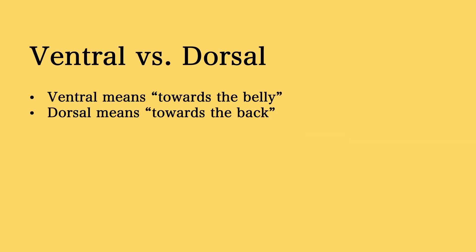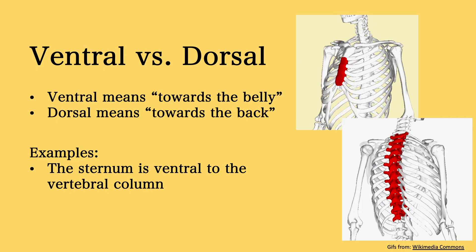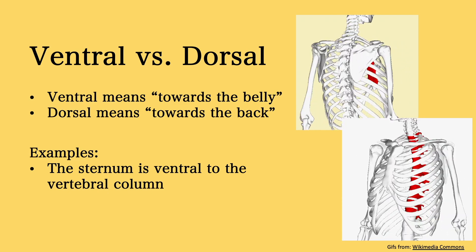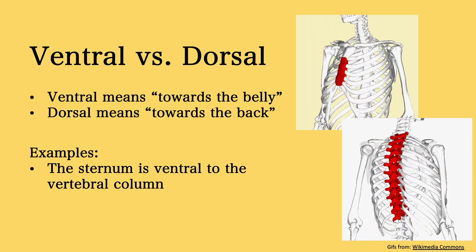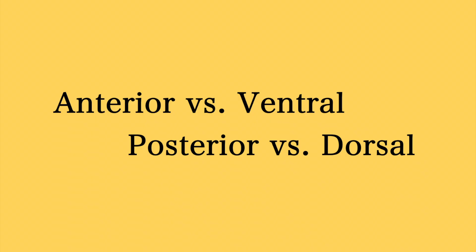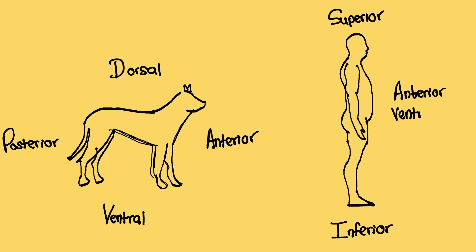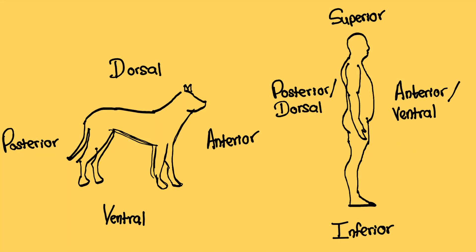Next, we have ventral and dorsal. Ventral means towards the belly and dorsal means towards the back. For example, the sternum is ventral to the vertebral column, meaning it is towards the belly compared to the vertebral column. Another example is that the kidneys are dorsal to the stomach. Some tend to get confused with the differences between anterior and ventral, and posterior and dorsal. Anterior means towards the front, while ventral means on or relating to the stomach. In humans, these terms essentially mean the same thing because we stand upright, but this is different in animals and plants.